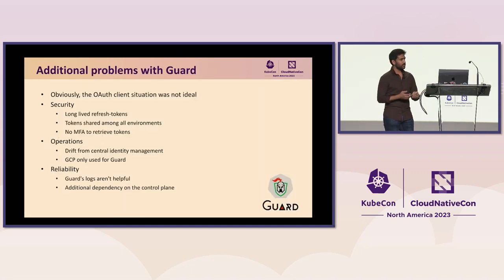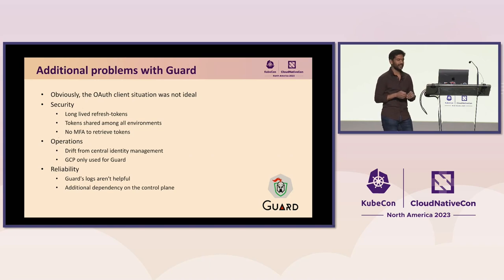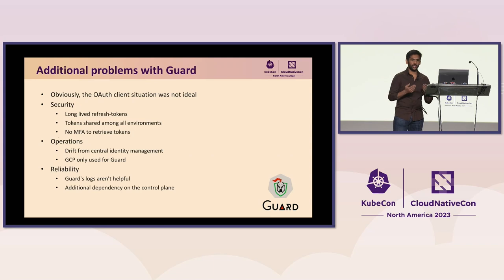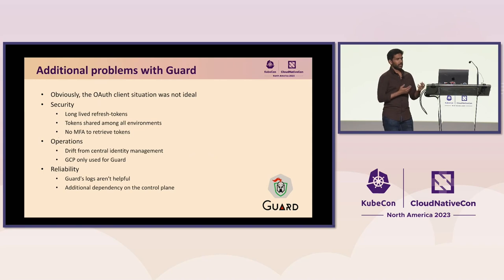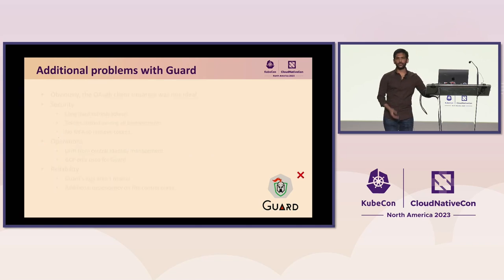The OAuth client situation was not ideal. Tokens auto-refresh, meaning they don't necessarily have short-lived access, and tokens can be retrieved without any MFA. From an operational standpoint, it was very difficult to understand what was going on from the Guard server perspective. Guard also runs as a control plane component — an additional add-on to maintain, with significant overhead. So we decided to stop using Guard.